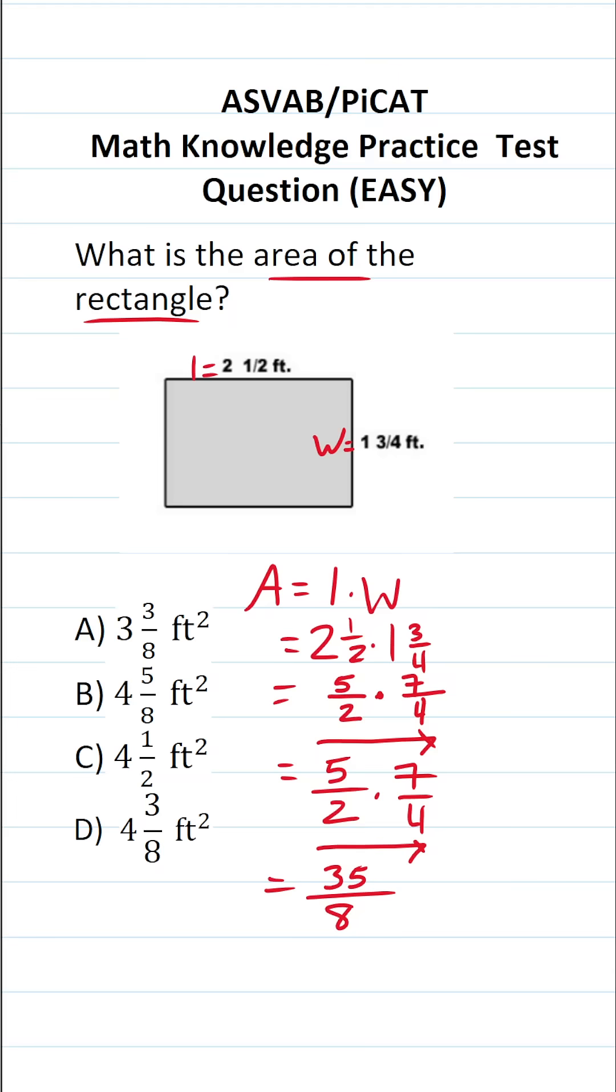Now the only thing we have left to do is convert this improper fraction back to a mixed number. We do that via long division. I can read this as 35 divided by 8.